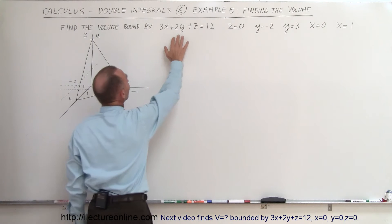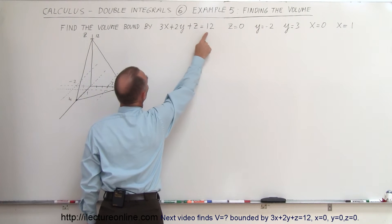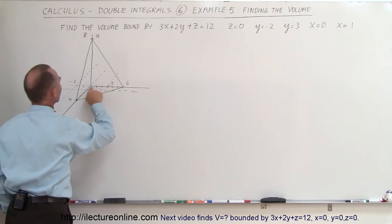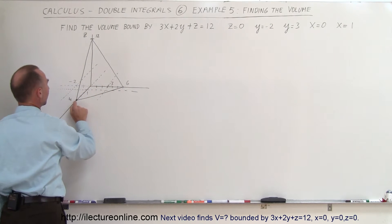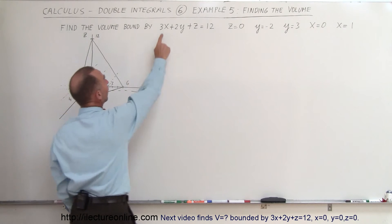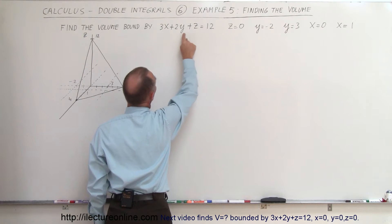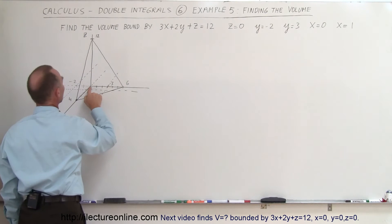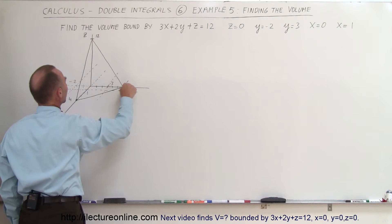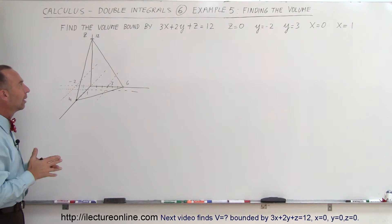If we set y and z equal to zero, then 3x equals 12, so x equals 4. When y and z equal zero, x equals 4. And finally, when x and z equal zero, 2y equals 12, so y equals 6. Connecting those three intercept points gives you a feel of what that plane looks like.